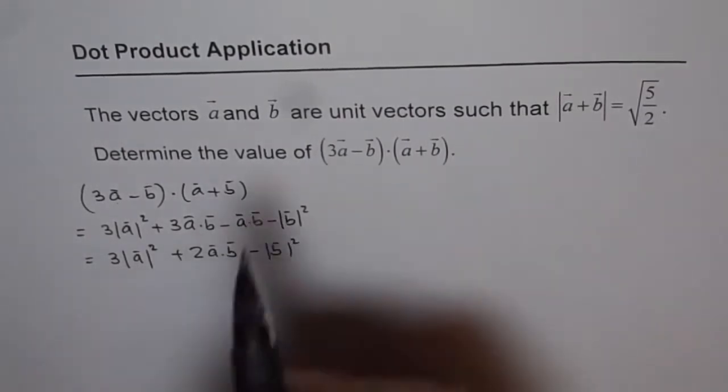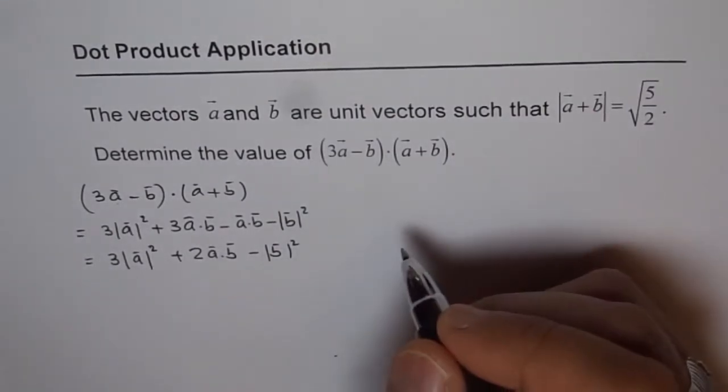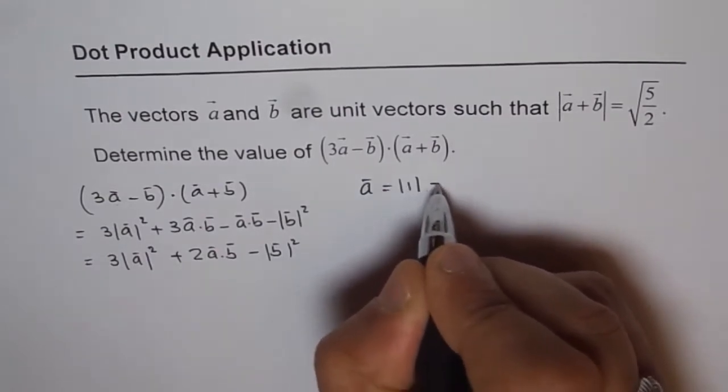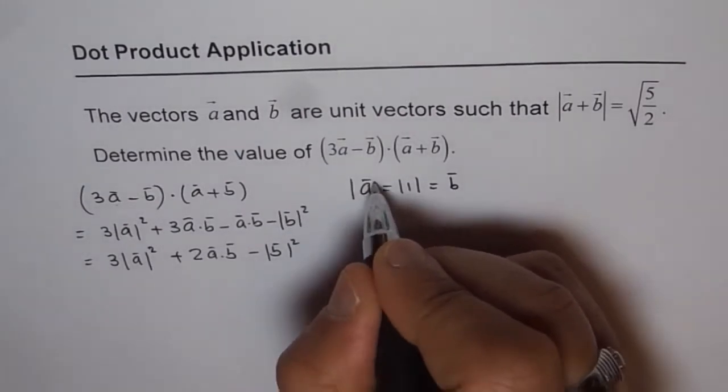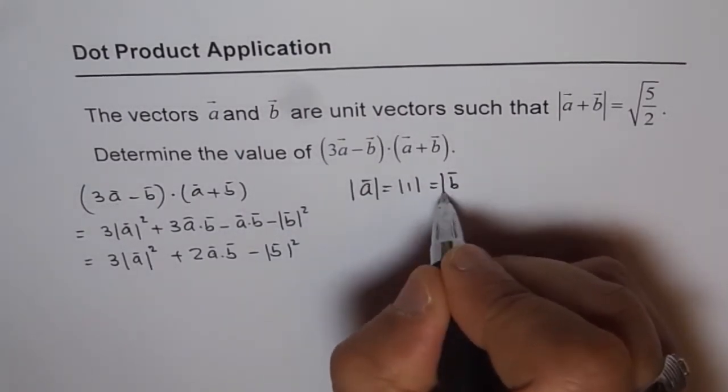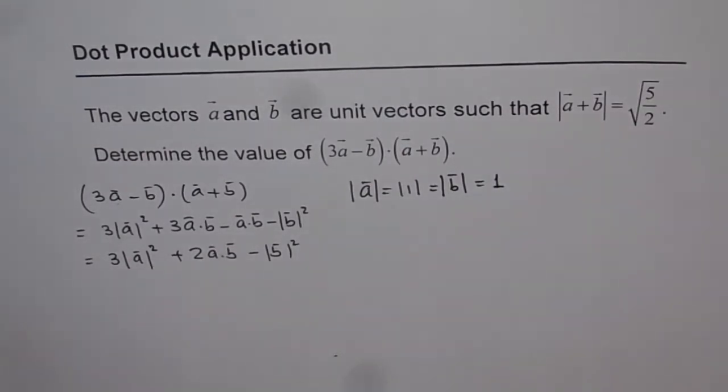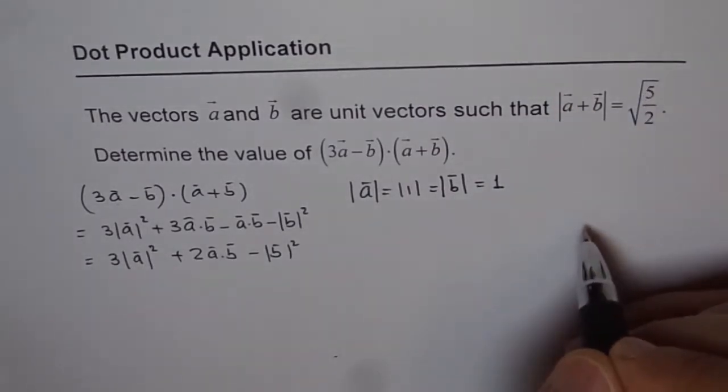You know a and b are unit vectors. So that's not a problem. You say a has a magnitude of 1, which is equal to magnitude of b, which is equal to 1. So this is what is given to us.